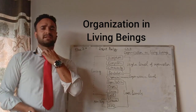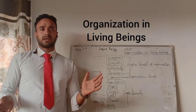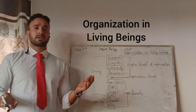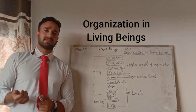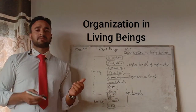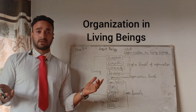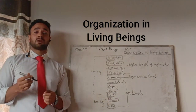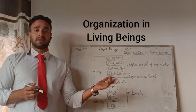Cell is the basic structure and functional unit of living organisms, whether plants or animals. Cell is common in both unicellular and multicellular organisms. Unicellular organisms like amoeba, paramecium, and bacteria have a single cell, and that single cell performs all the basic functions of life — like respiration, photosynthesis in some cases, breathing, excretion, and osmoregulation. So all these functions are performed by a single cell in unicellular organisms.